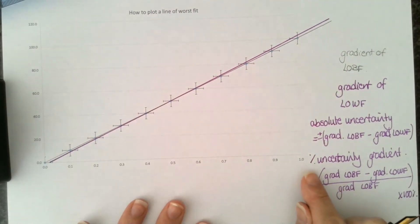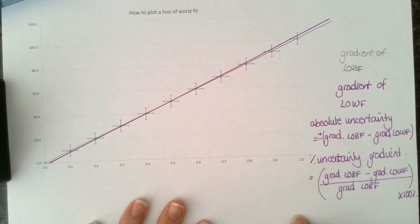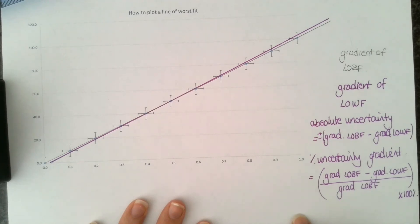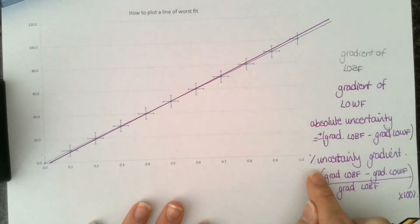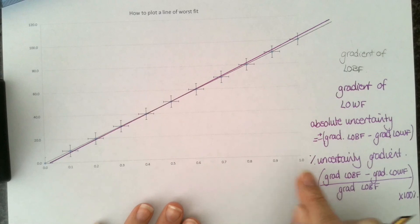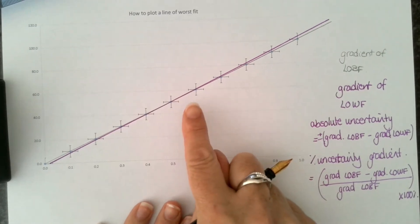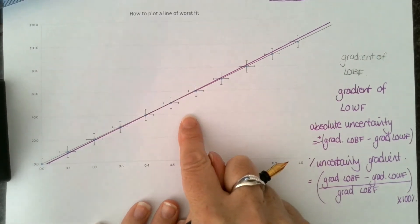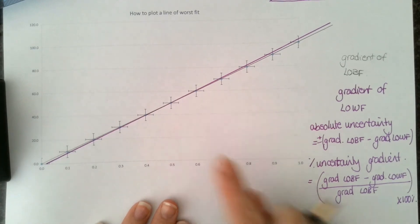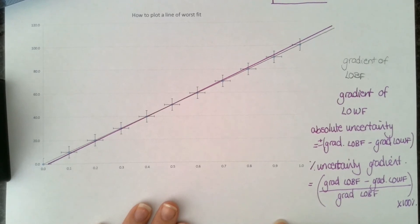That's going to give us the percentage uncertainty in the gradient. Whatever calculation we then do with our gradient, as long as there isn't an uncertainty in any other value that we need to add on, that percentage uncertainty in the gradient will give us the percentage uncertainty in the value that we calculate.